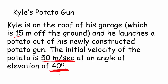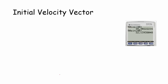The first thing to think about is the initial velocity vector. If I just do a quick sketch here: this initial velocity vector, v sub 0, has a magnitude of 50 meters per second, shot at a 40-degree angle of elevation with the horizontal. We need to figure out what the initial velocity is in the x direction and the initial velocity in the y direction.